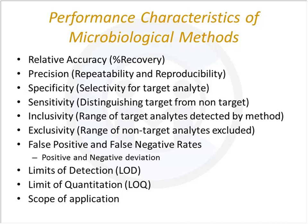How do we know that the method is going to be inclusive for those 2,500 Salmonella serotypes? I'm not saying to test all 2,500, but there are certain operational parameters to use when looking at performance characteristics for inclusivity. Exclusivity, of course, is the range of non-targets excluded — those not detected by the method — and the ability of the method to distinguish a positive outcome from a negative outcome.